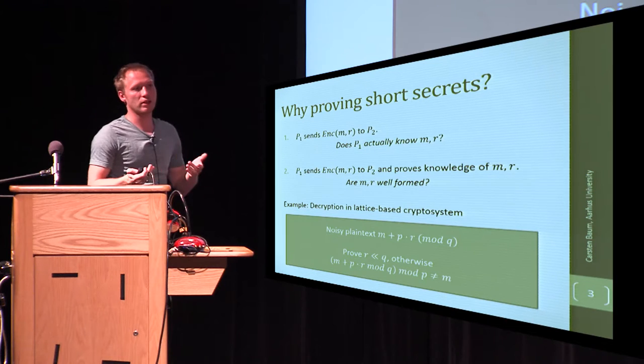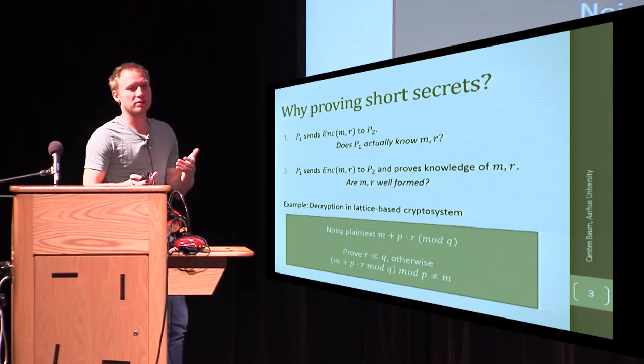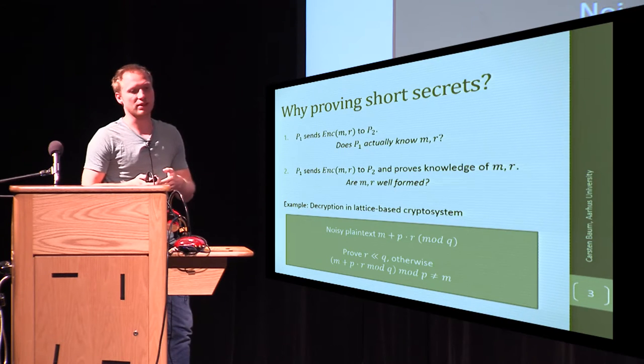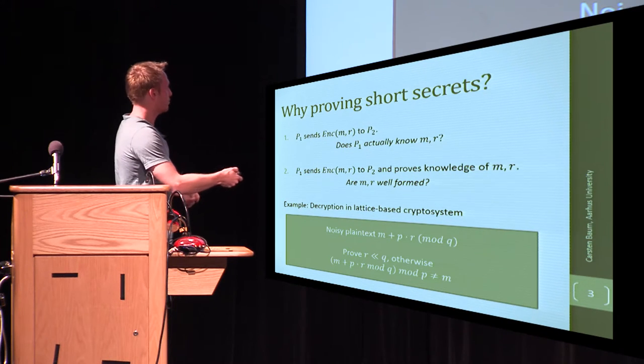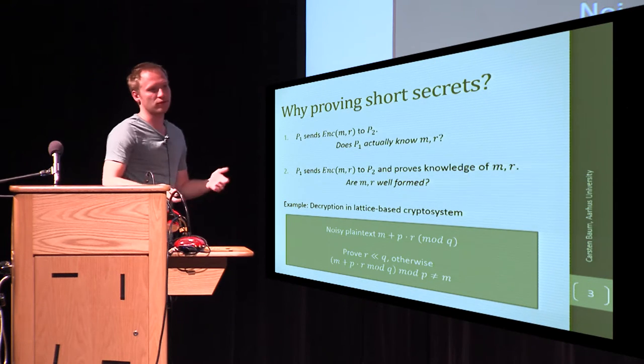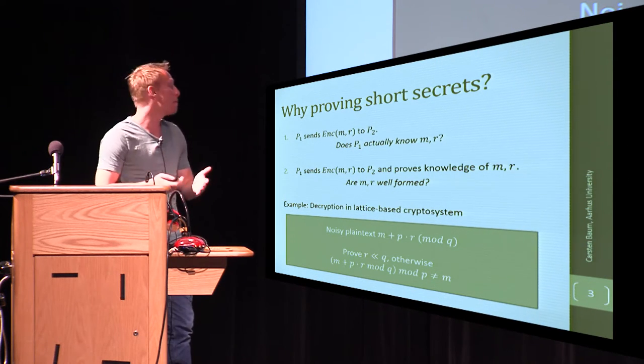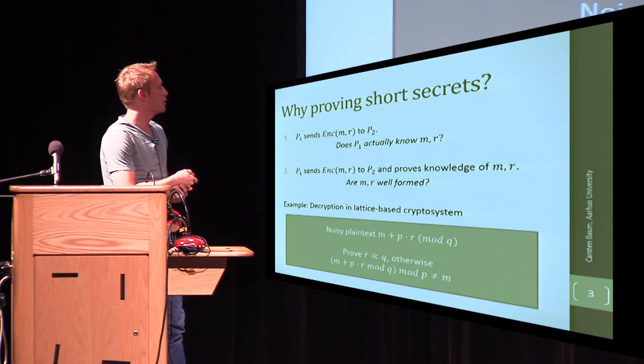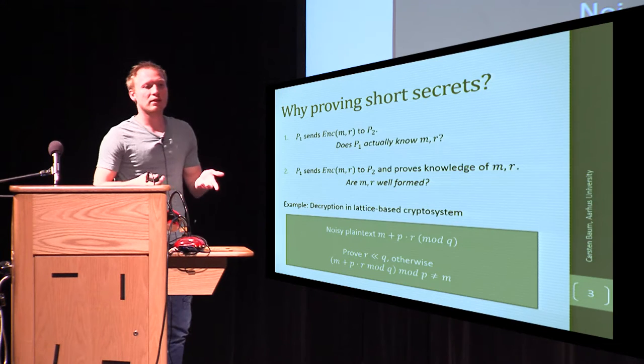If you think about it, when you decrypt in lattice-based cryptosystems, you mostly get these noisy plaintexts. You get both your message plus some randomness on top, which if you do a modular reduction, it goes away. But then the problem is if your noise here gets too large, depending on the message, this may wrap around or not.